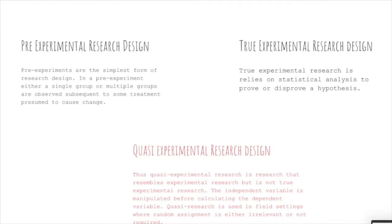The next one is true-experimental. True-experimental research relies on statistical analysis to prove or disprove a hypothesis. These types are more reliant on the statistical analysis.